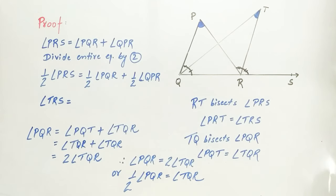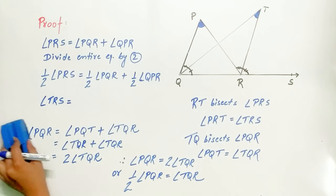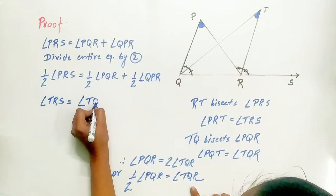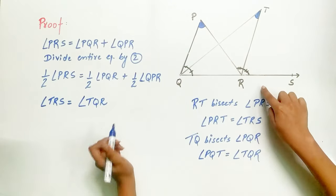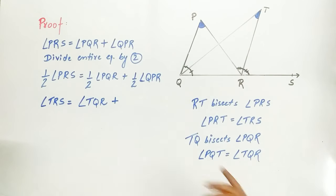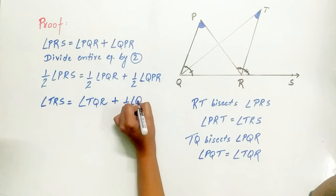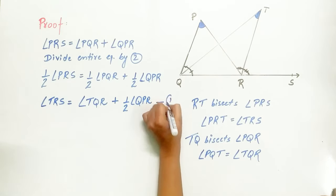Note it down if you want to. Hence, half of angle PRS equals angle TRS equals half of angle PQR plus half of angle QPR. Let's mark it as equation 1.